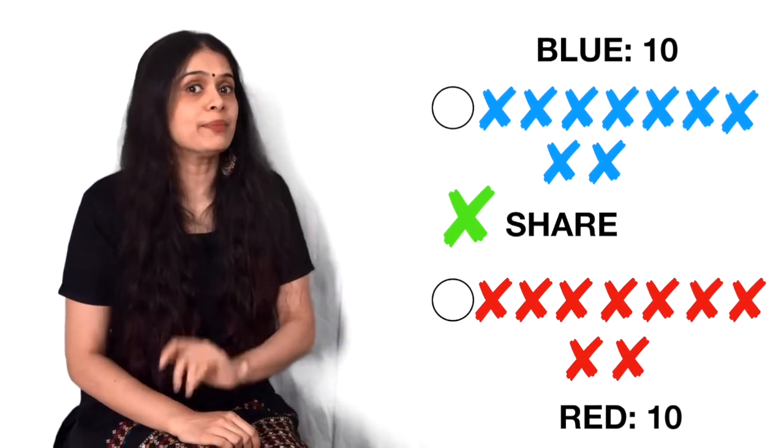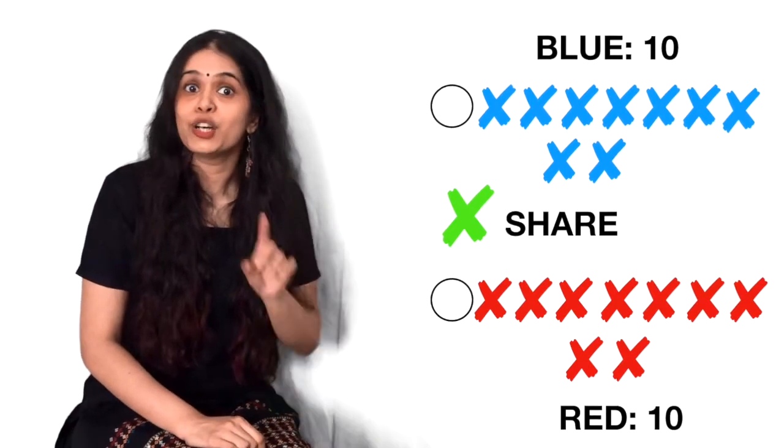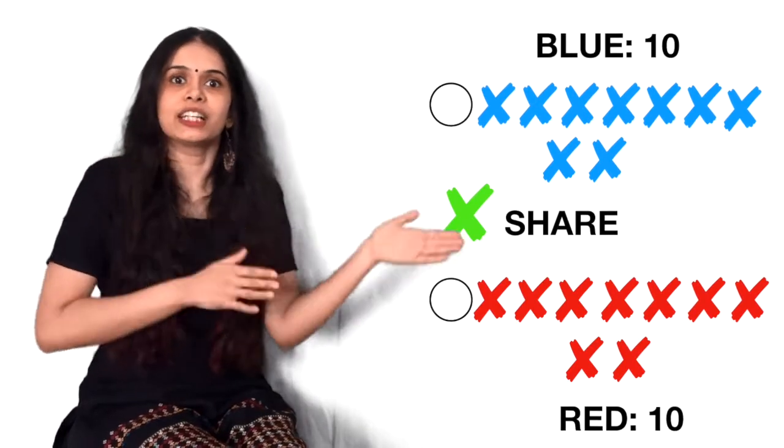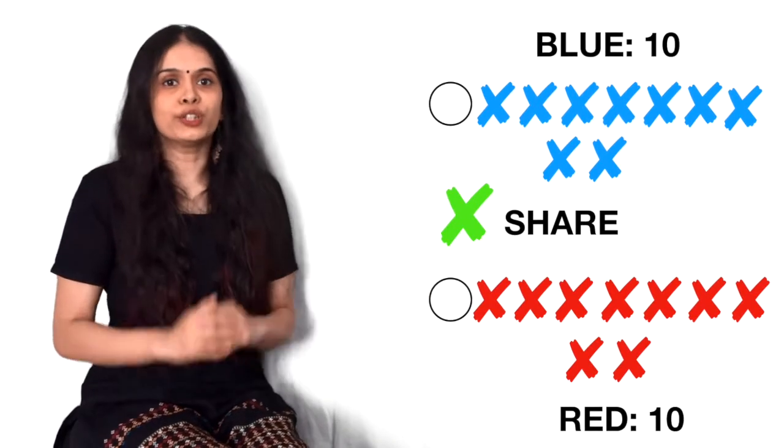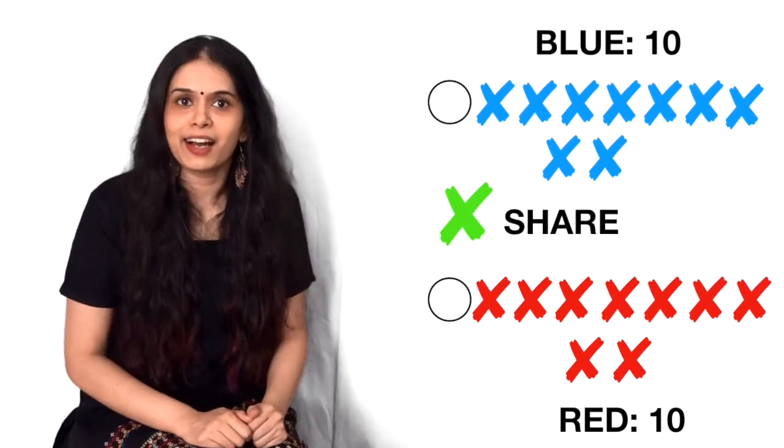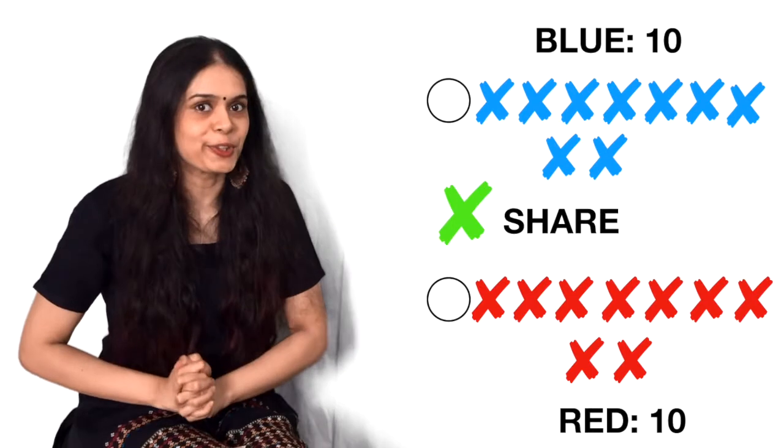Hum us ko share kar lenge. So yeh jo green wala player hai, maan ke woh Saurav hai. So when the red team is fielding, Saurav will play for the red team. But when the blue team is fielding, Saurav will also play for the blue team. So woh dono taraf se khel lega. Matlab, dono teams ne kya kiya? Saurav ko share kar liya. So umpire ne kya kaha? Okay, he said you guys can play. So that is the first story.